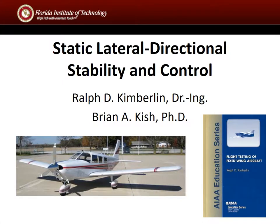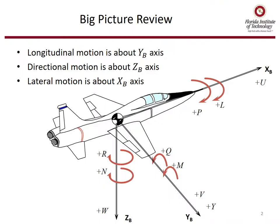We'll now cover static lateral directional stability and control. The information for this topic is in Chapter 28. Big picture: longitudinal motion was motion about the y-body axis, directional motion is about the z-body axis, and lateral motion is about the x-body axis.